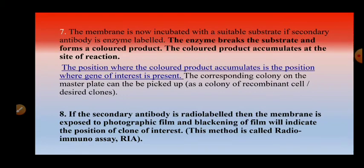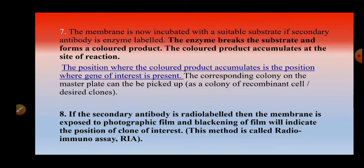The enzyme present on the secondary antibody breaks the substrate and forms a colored product. The colored product accumulates at the site of the antigen-antibody reaction — the position where the gene of interest, the foreign gene, is present. The corresponding colony is identified by comparing the colored spot on the nitrocellulose membrane with that of the master plate, and that colony is picked as the desired recombinant clone, then used for further production of the antigenic protein.